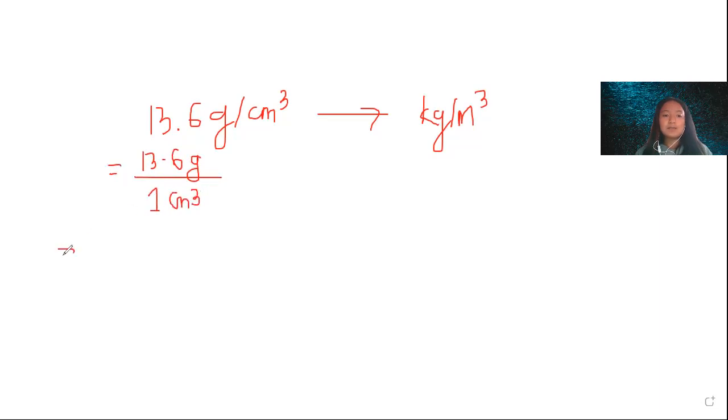Let us simplify this further. 13.6 gram of mercury present in one centimeter cube of volume. This can be further simplified into one centimeter into one centimeter into one centimeter. It means the same thing.